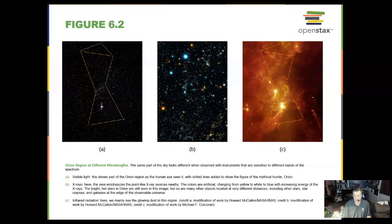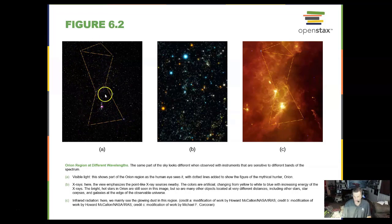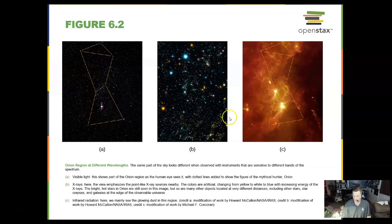Here is a region of space very common to amateur astronomers: the Orion Nebula and Orion's Belt. Here are the shoulders and feet of Orion, and here is Orion's Belt. In the middle of the belt is the middle star, and there is the Orion Nebula. In different wavelengths, it looks different ways.